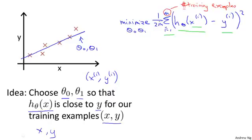And putting the 2, the constant 1 half in front, it just makes some of the math a little bit easier. So minimizing 1 half of something should give you the same values for the parameters theta 0 and theta 1 as minimizing that function.